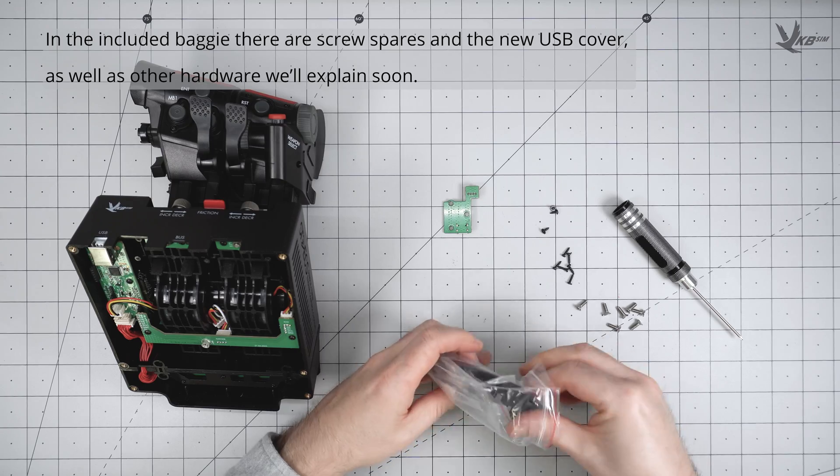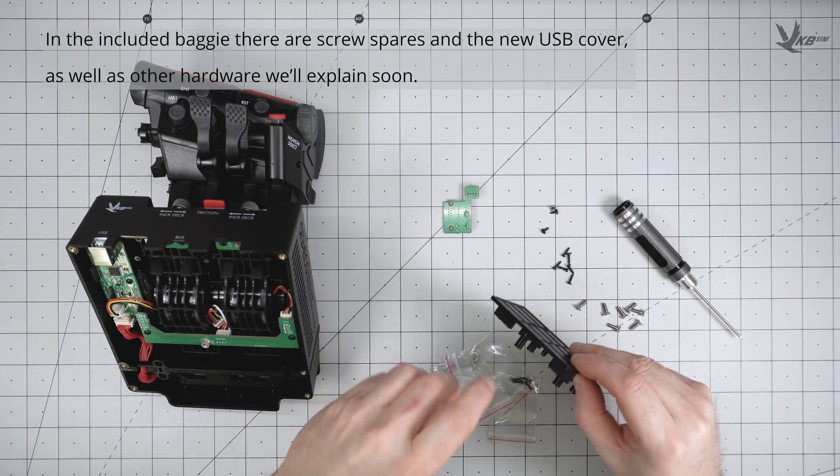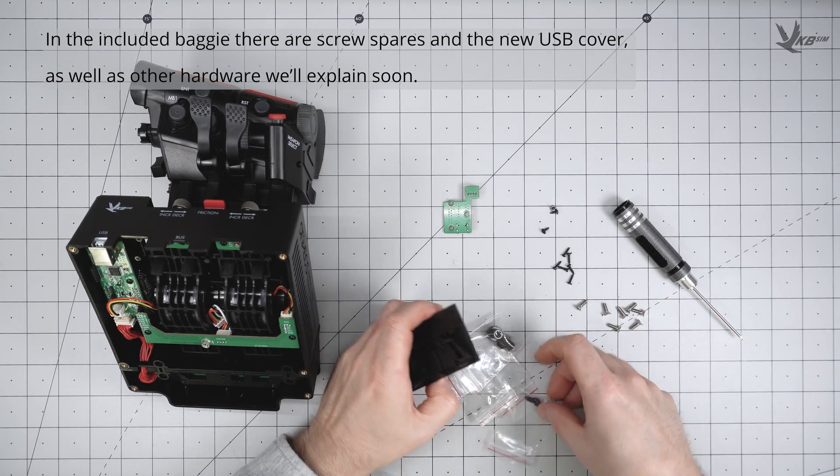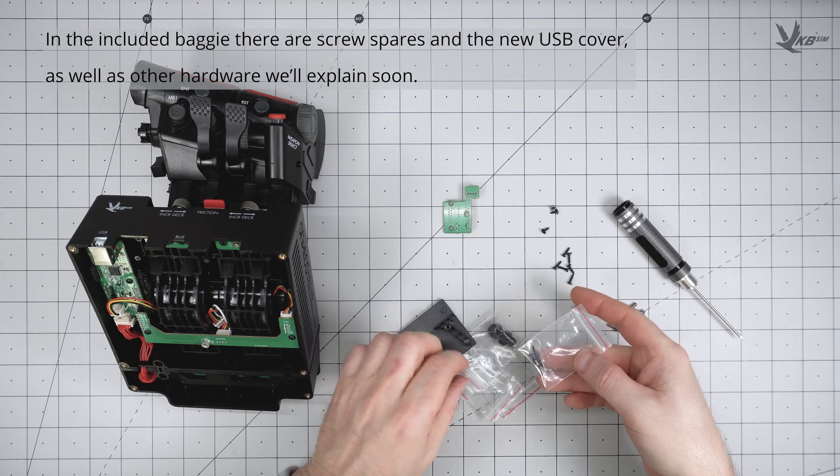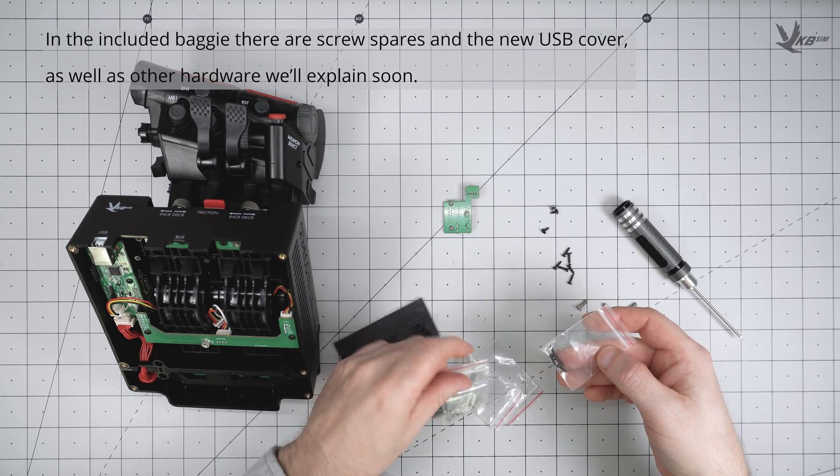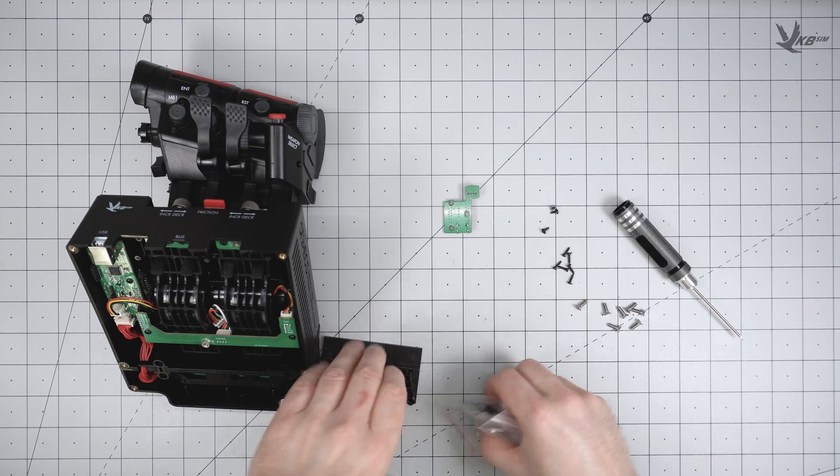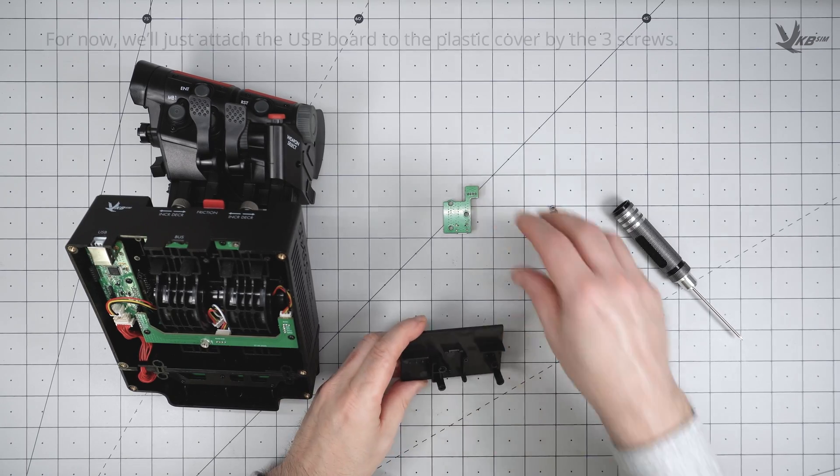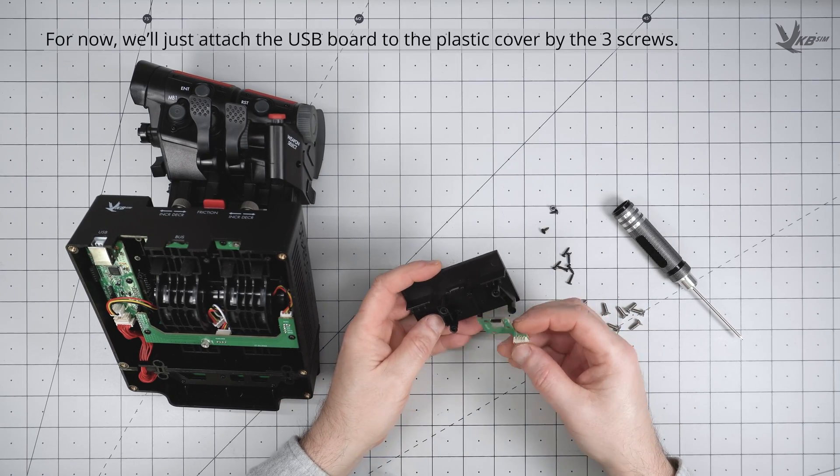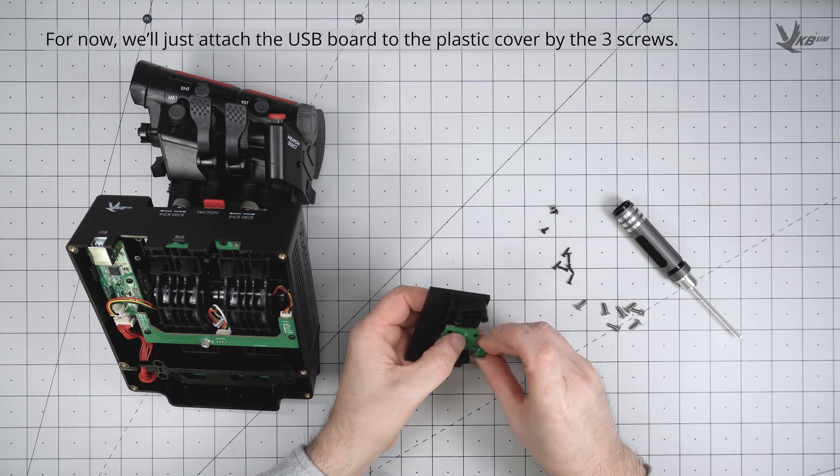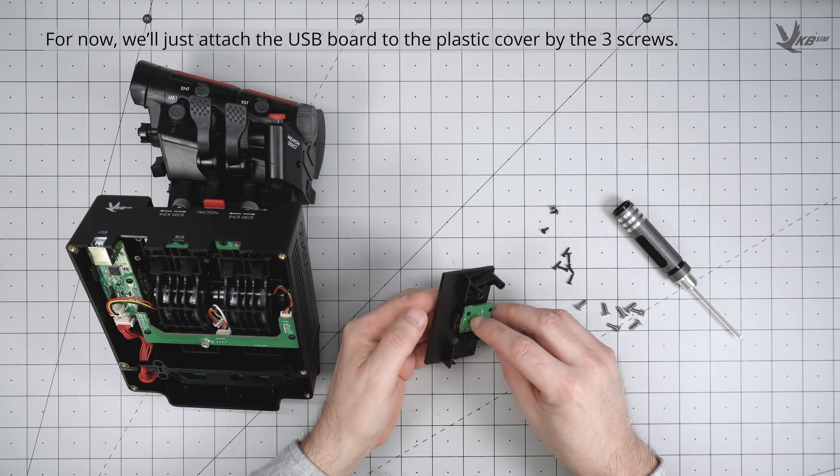In the included baggies, you can find spare screws, the new cover, and some other things that will be relevant later. Attach the USB board to the new cover with the same 3 screws. We'll be reusing the screws for the cover too.